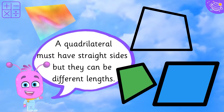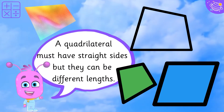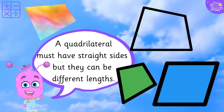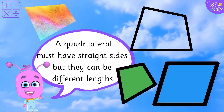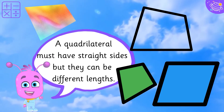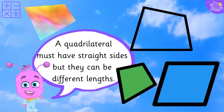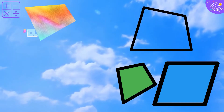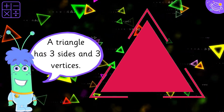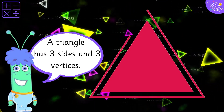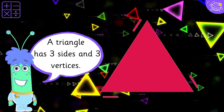A quadrilateral must have straight sides, but they can be different lengths. A triangle has 3 sides and 3 vertices.